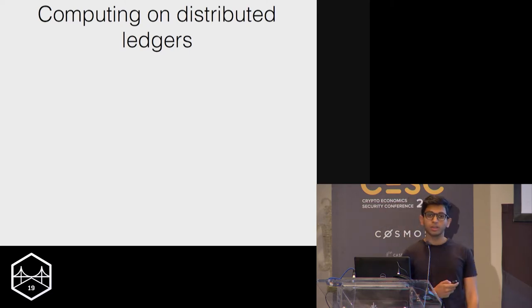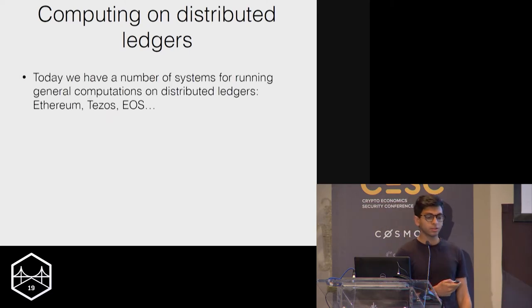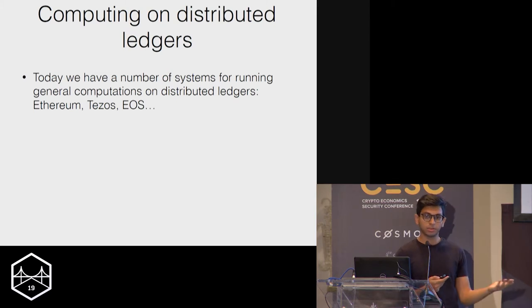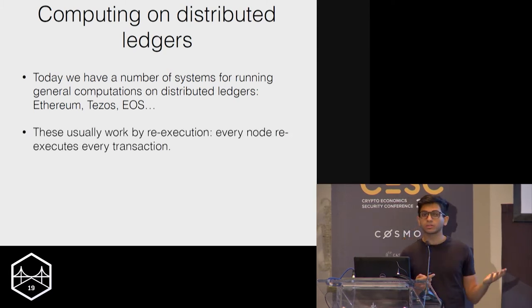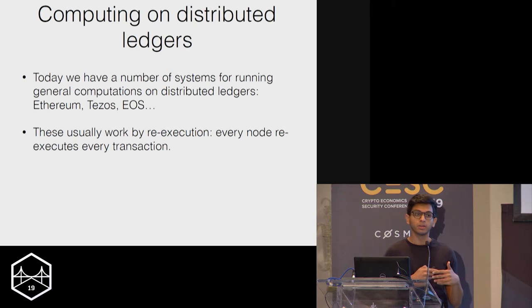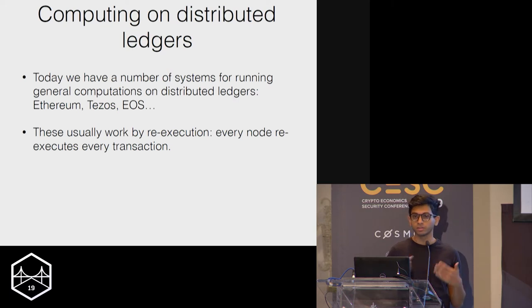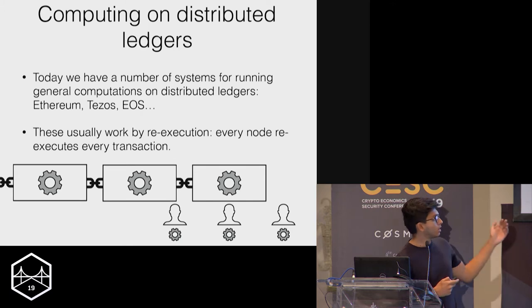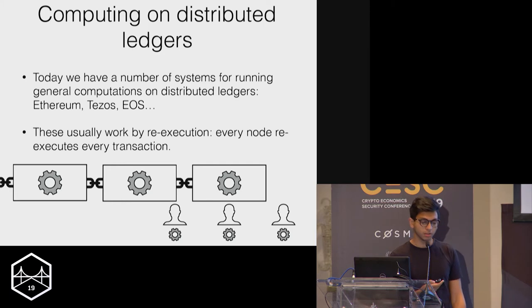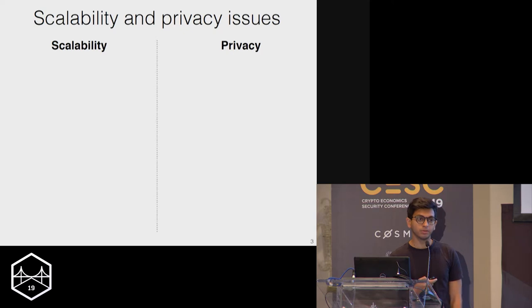Today, if you want to conduct computations on distributed ledgers, you have a number of systems you can use — Ethereum, Tezos, EOS — you have a lot of choices. But the common thing amongst all of these is that they all work by what's called re-execution. Every node has to re-execute every transaction to check whether the transaction is valid or not, and this causes two problems from scalability and privacy perspectives.